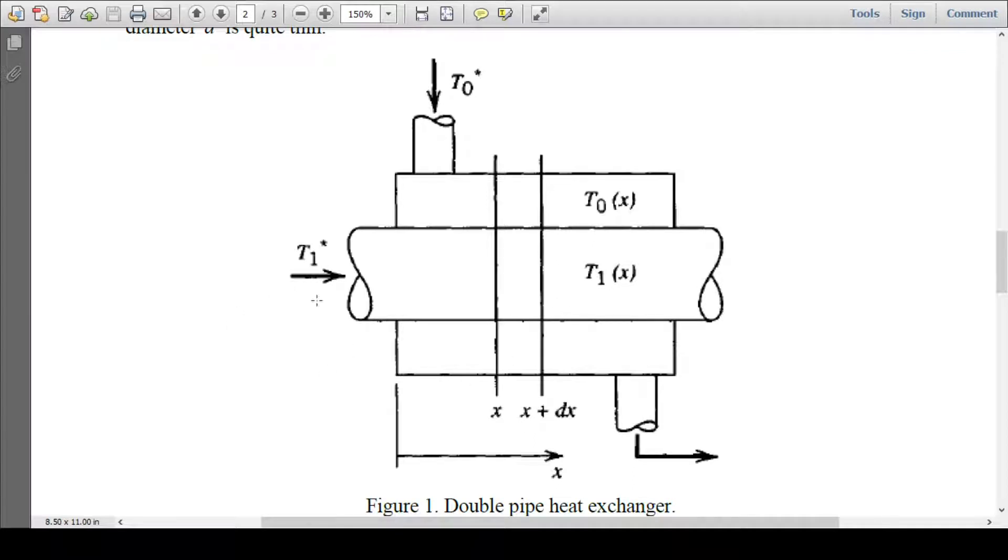Here the distillate is flowing inside this pipe of diameter D. Outside, cold water is flowing to cool the condensate.